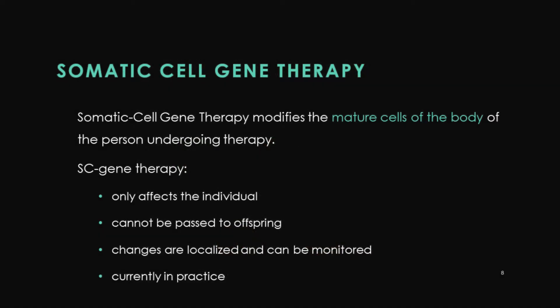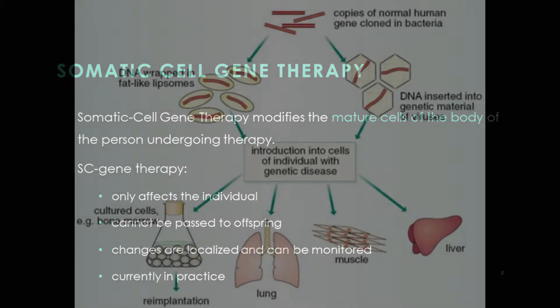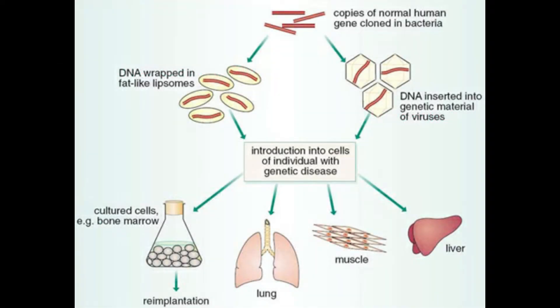Somatic cell therapy involves modifying the cells of your body. When a person undergoes somatic cell therapy, it only affects that individual. The effects cannot be passed on to their offspring, because the therapy is localized to the type of cell it is administered to, and that area is easy to monitor.